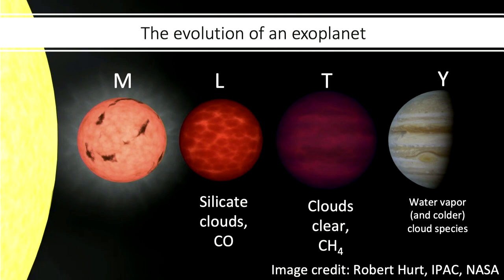Now we can start getting into characterization. We need to talk about the spectral types expected for exoplanets — this is an extension of the spectral type scheme for stars. Unlike stars, a young planet or brown dwarf starts out hot and cools monotonically with time, transitioning through spectral types: starting with M, cooling to L — characterized by silicate clouds and carbon locked up in CO — then transitioning to T-dwarf, where silicate clouds clear and chemistry becomes dominated by methane. Eventually you cool to the Y spectral type, where you start seeing water vapor and ammonia.